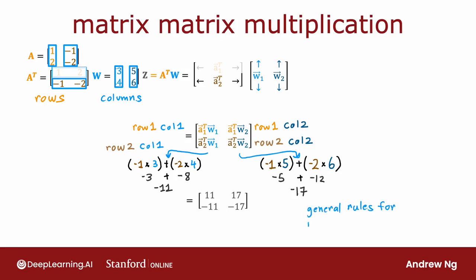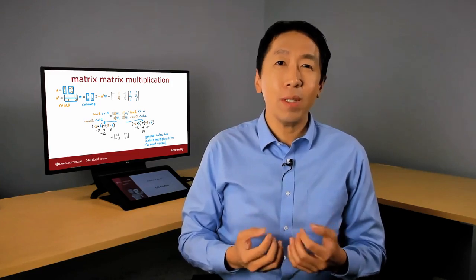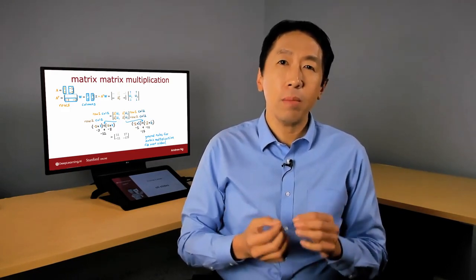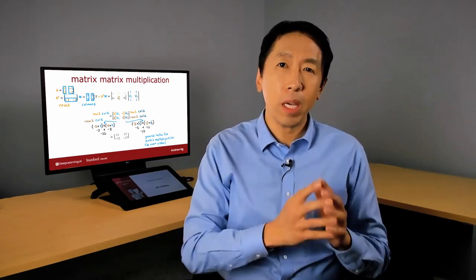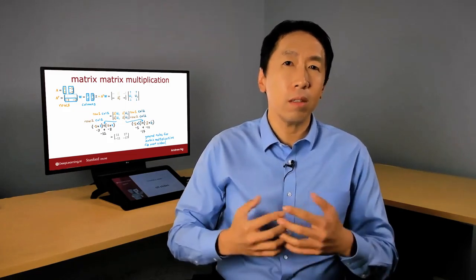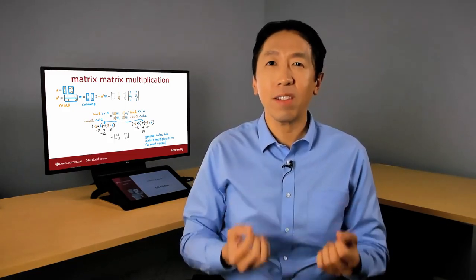Let's talk about the general form of matrix multiplication in the next video. This was an example of how you multiply a vector with a matrix, or a matrix with a matrix — there are a lot of dot products between vectors, ordered in a certain way to construct the elements of the output Z one element at a time. In the next video, let's look at the general form of how matrix-matrix multiplication is defined.